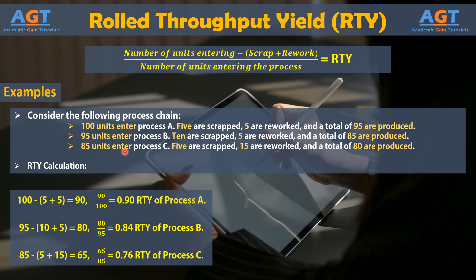The number of units entering process B is 95, minus 10 scraps plus 5 reworks, equals 80. Now 80 divided by 95 equals 0.84, which is the rolled throughput yield for B.